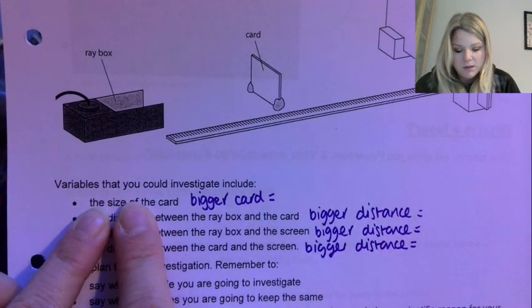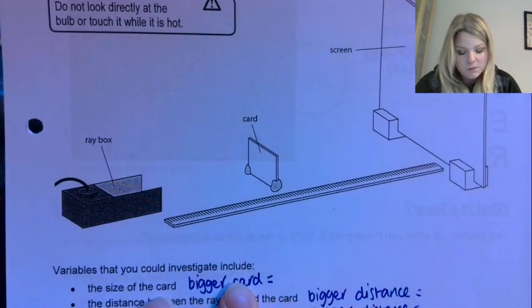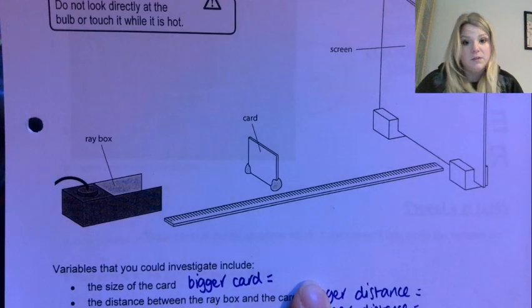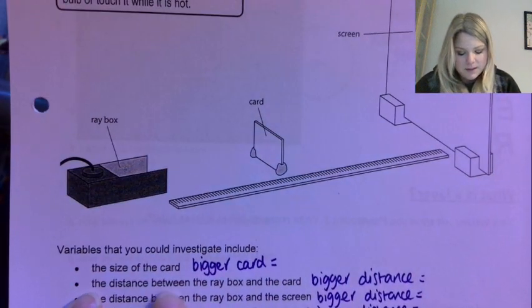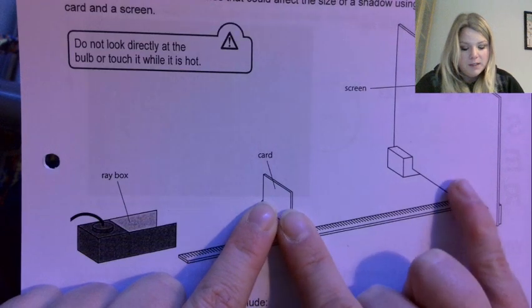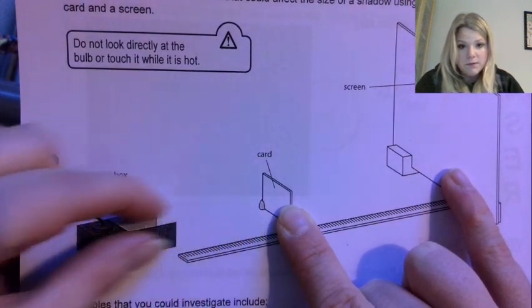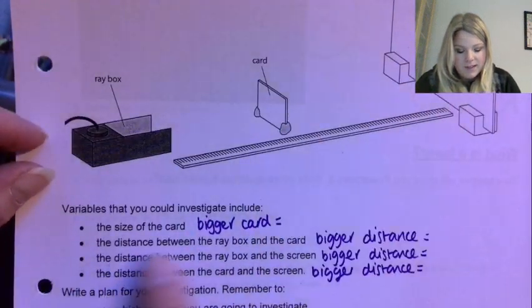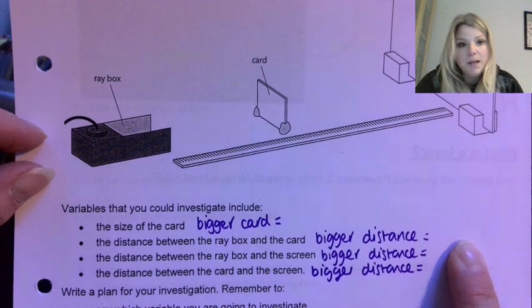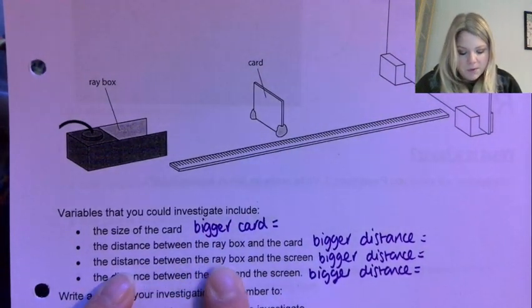So the size of the card, so if you just change that for a different object, so a bigger card or a bigger object, say what happens to the shadow. Is the shadow going to be bigger or is it going to be smaller? The distance between the ray box and the card, so in that one you would keep these two the same and then move your light source closer and further away. So again bigger distance between the card and the ray box, say what happens to the shadow. Is that bigger or smaller?